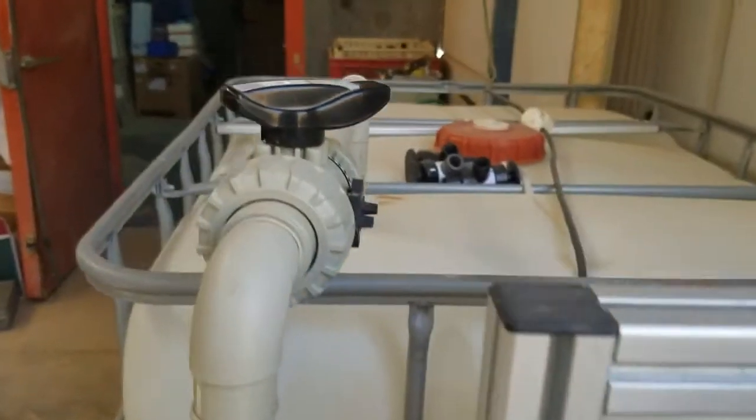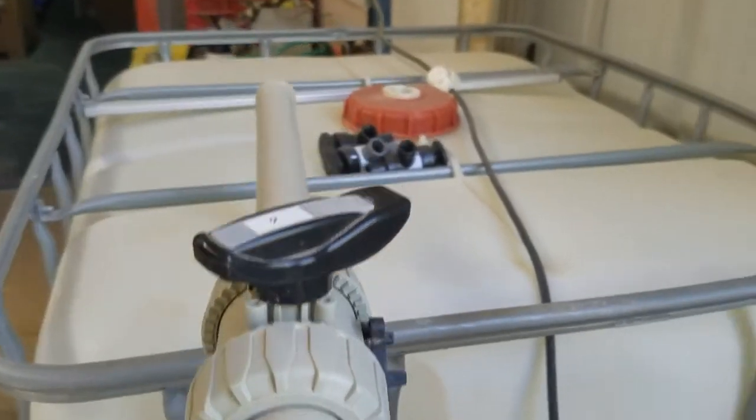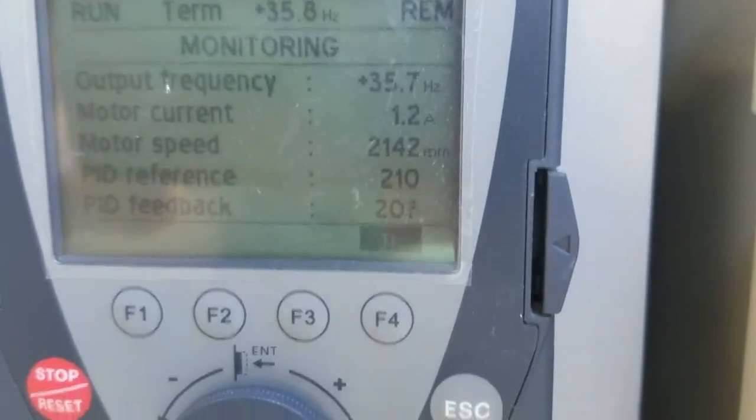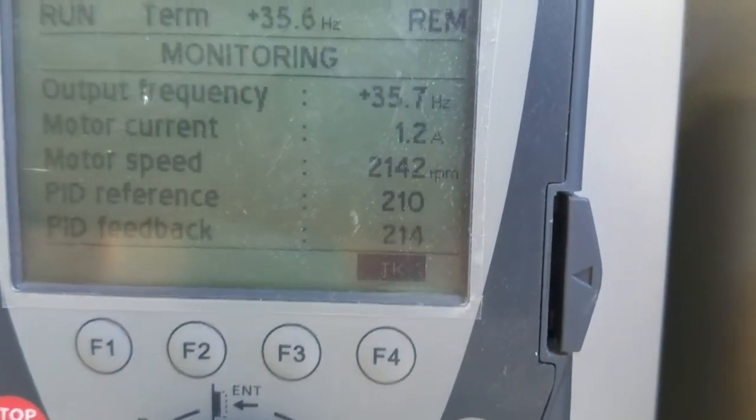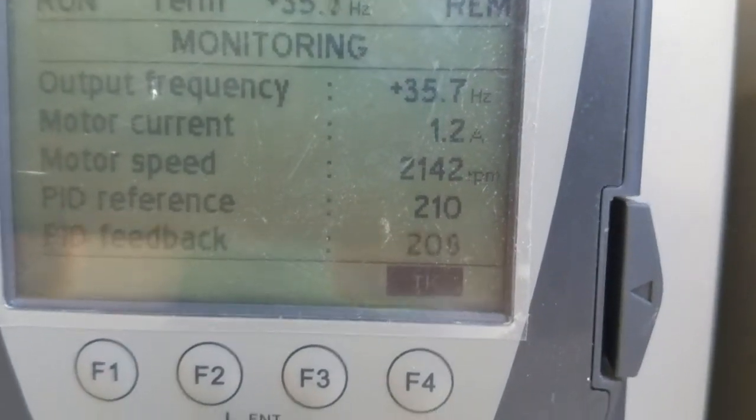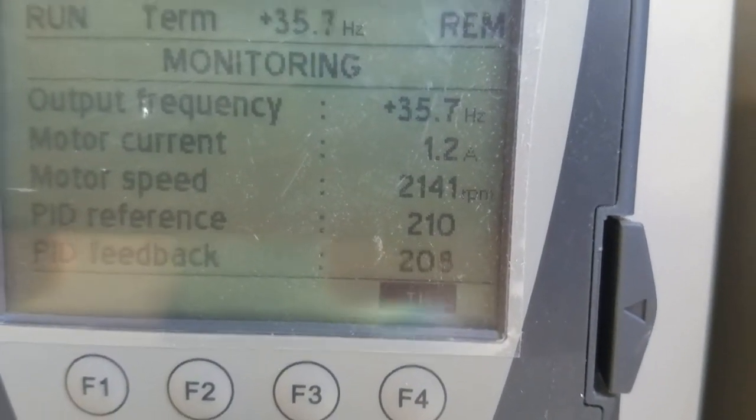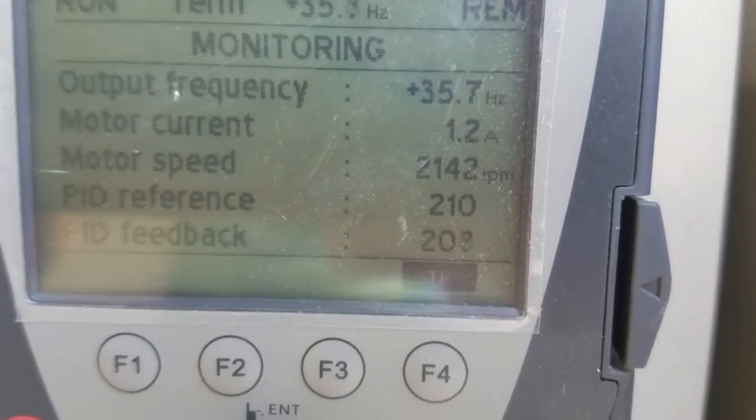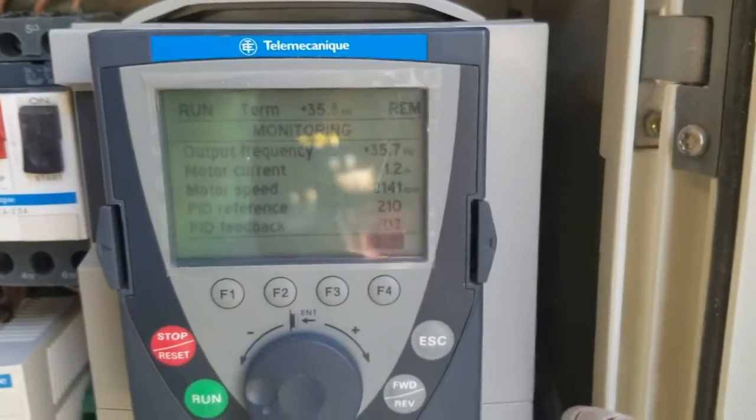Because the valve is partly obstructed, as you can see, the VSD is only turning at 35 hertz, which is only about half of the speed—a little bit more than half. Now I will open the valve a little bit.